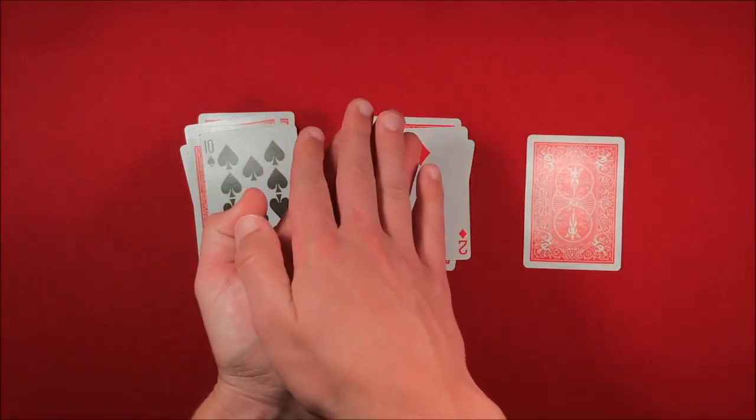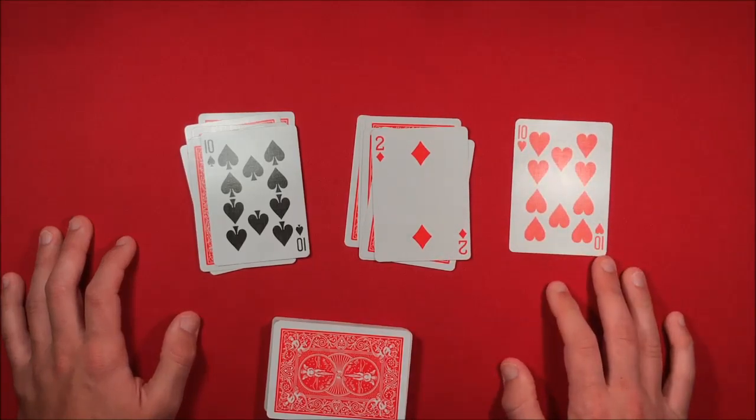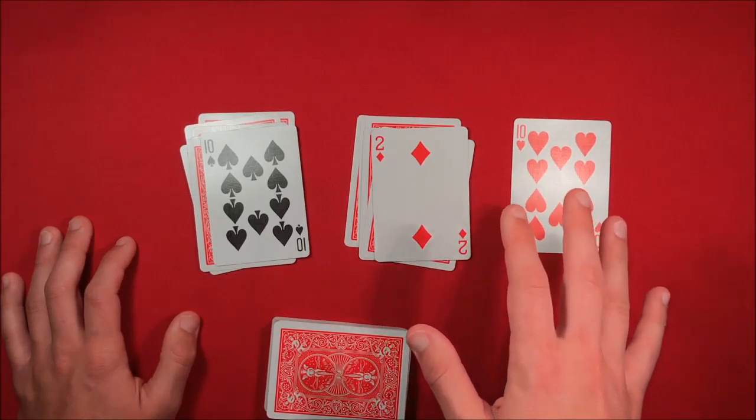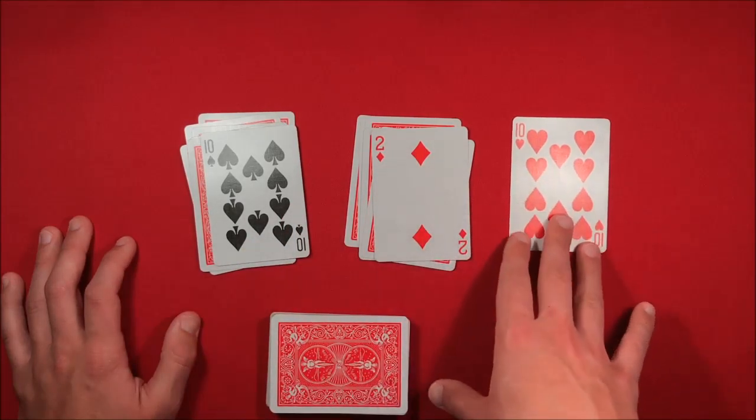So just like that, if you have the spectator hold the card, you can tell them turn it over. Or you can flip this over and it's going to be a red ten. So this is the trick guys. I hope you guys like it, and like I said before, I'm going to be going into more videos and more tricks using the sidestep and stack.